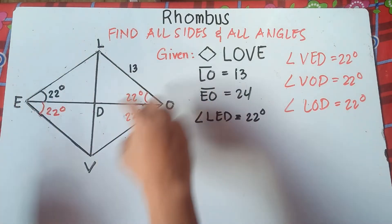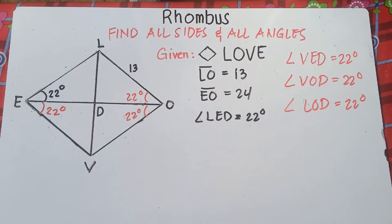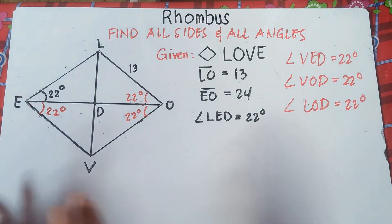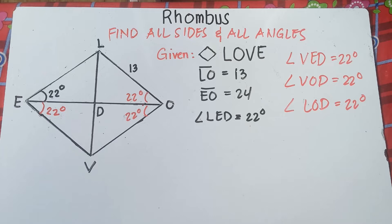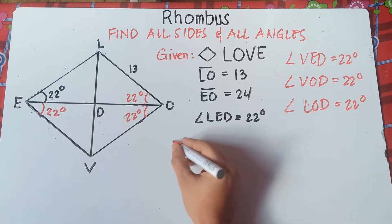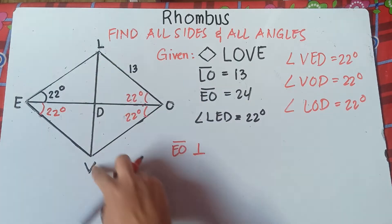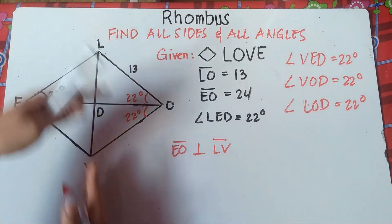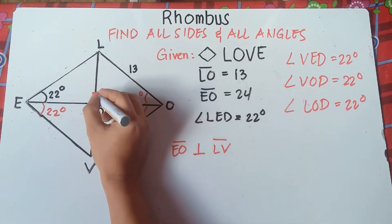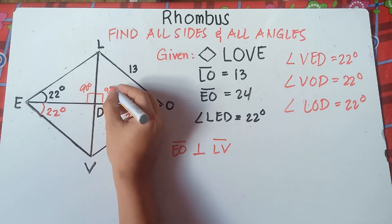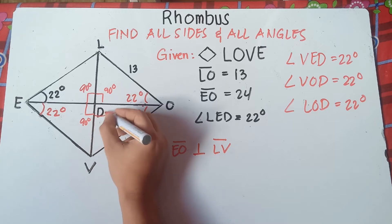Alright, so we're done with these opposite angles. Next, we need to remember that one of the properties of a rhombus says that the diagonals are perpendicular to each other. The diagonals intersect and bisect each other, and they form a 90-degree right angle. That's the meaning of perpendicular — two lines intersecting each other forming a 90-degree angle. So we can say that line EO is perpendicular to line LV, because when they intersect they form 90-degree right angles. So all four angles at the intersection are 90 degrees.